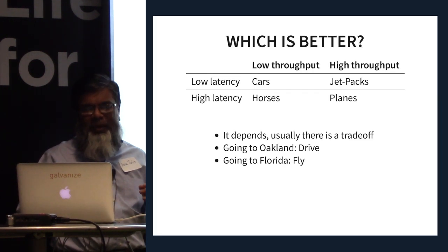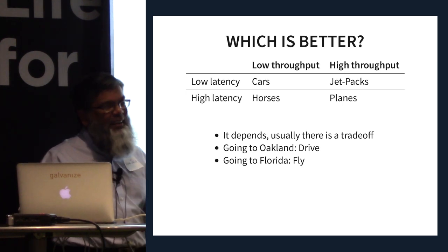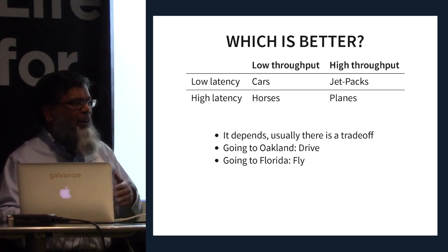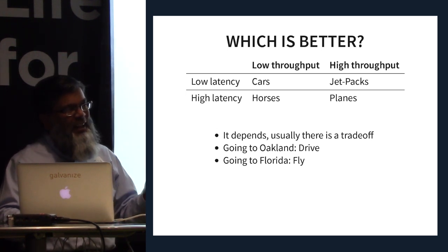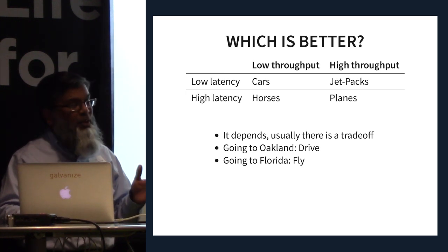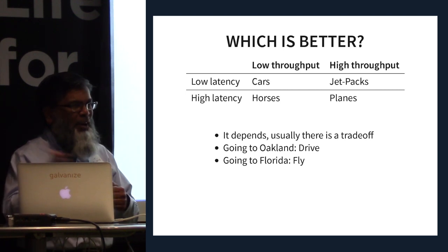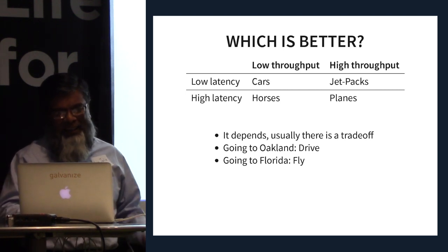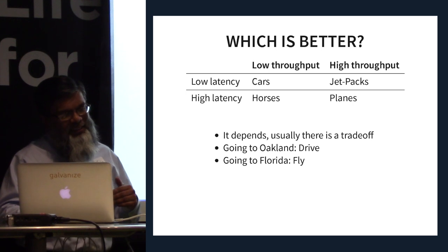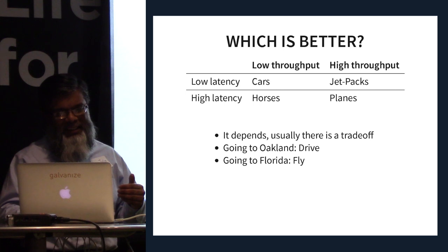Looking at this matrix: cars have low latency but also low throughput. Airplanes have high latency — you have to get through all the lines — but once you're in, things go really fast. Jetpacks might be like high throughput and low latency, the perfect sweet spot. Horses take a while to saddle up and are slower than cars, so they're in the worst corner of the matrix.